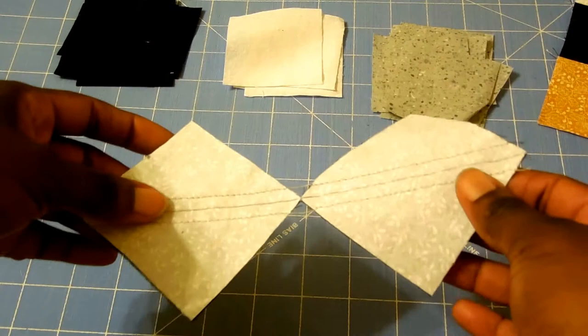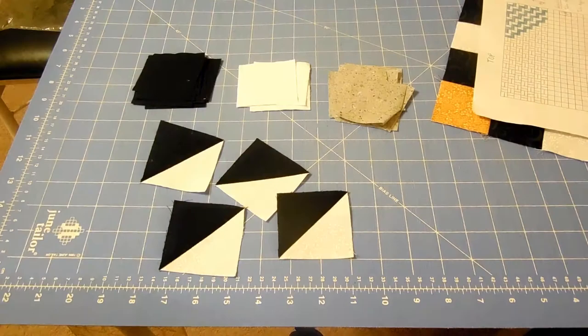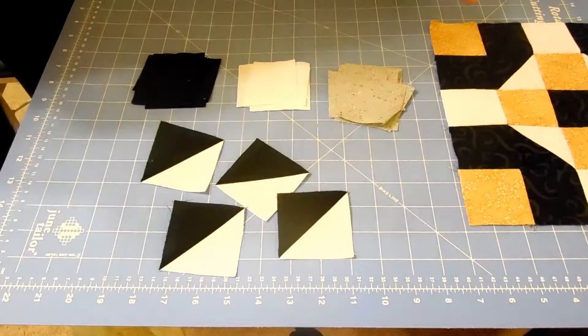Now I have my four half square triangle units done. You can see them here. I can lay out my design. You want to lay out your design to be sure that you're sewing everything in the right direction. You can either use your picture or since I have a block here that's already made, I can just follow the block.